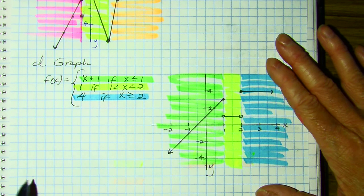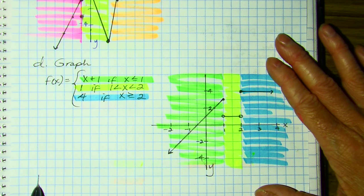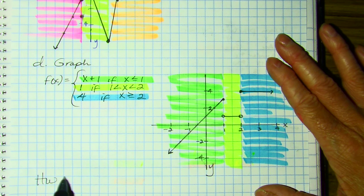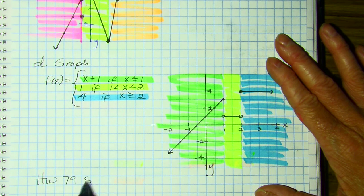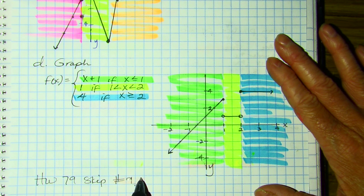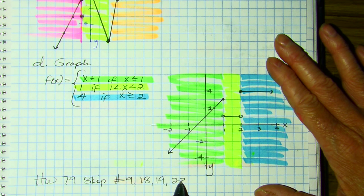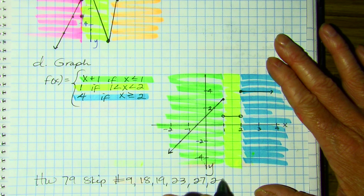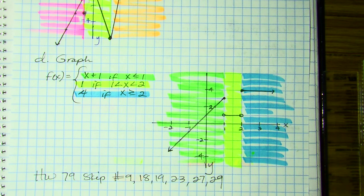That is it for Homework 79. You're going to skip numbers 9, 18, 19, 23, 27, and 29. Thank you.